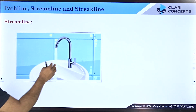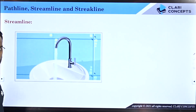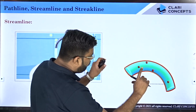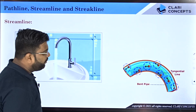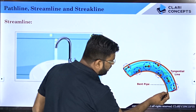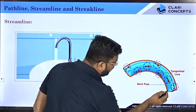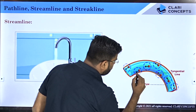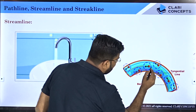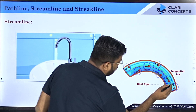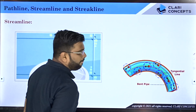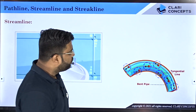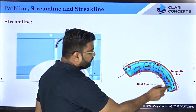Now if I ask you to find the streamline for the same wash basin example — zooming into the picture and taking a photograph at any instant of time — I can draw lines tangent to the velocity vectors. I get one line like this, another line like this, and many such lines of the same orientation. All of these are streamlines, and one of these lines is the central line as well.